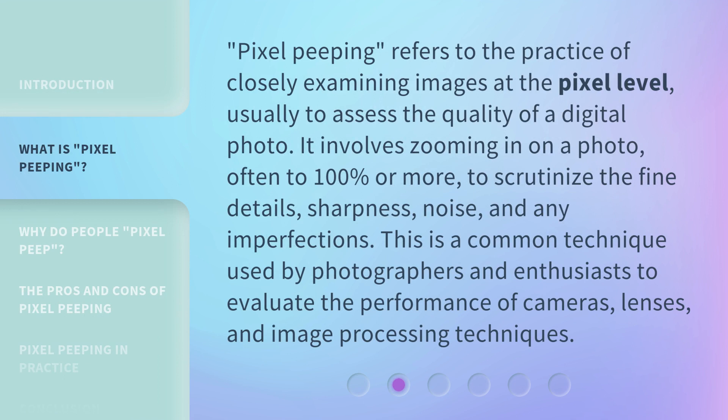Pixel Peeping refers to the practice of closely examining images at the pixel level, usually to assess the quality of a digital photo. It involves zooming in on a photo, often to 100% or more, to scrutinize the fine details, sharpness, noise, and any imperfections. This is a common technique used by photographers and enthusiasts to evaluate the performance of cameras, lenses, and image processing techniques.